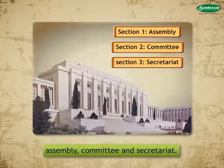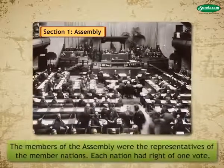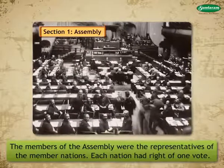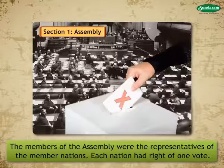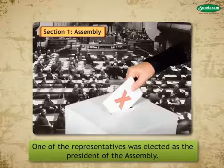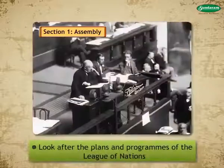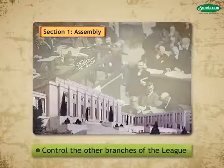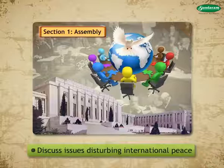The first section was the Assembly. The members of the Assembly were the representatives of the member nations. Each nation had the right of one vote. One of the representatives was elected as the President of the Assembly. The role of the Assembly was to look after the plans and programs of the League of Nations, control the other branches of the League, and discuss issues disturbing international peace.